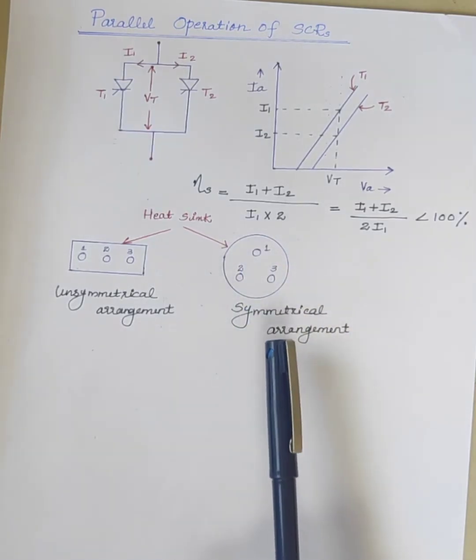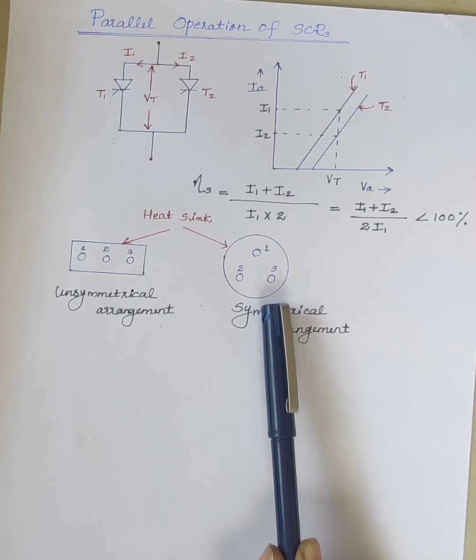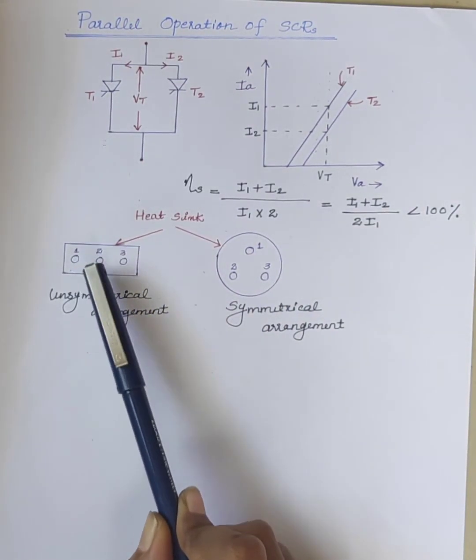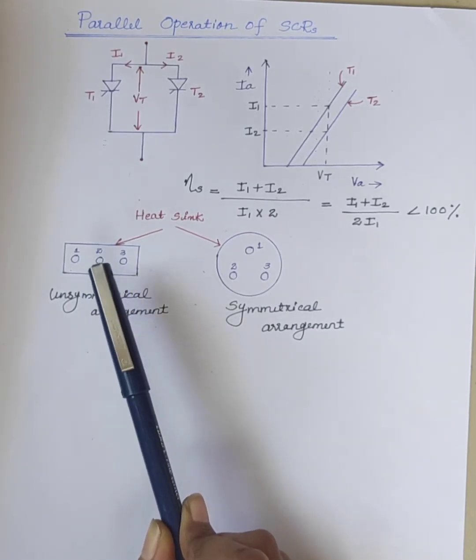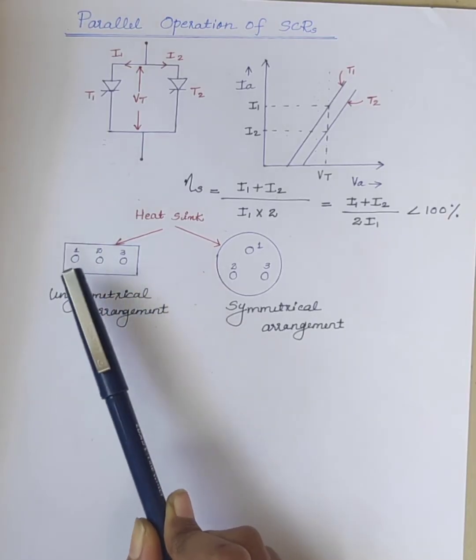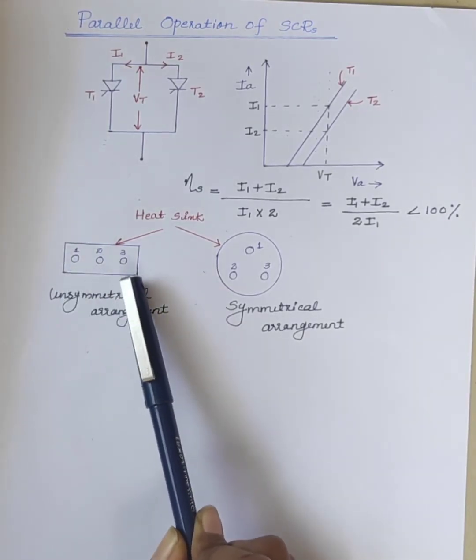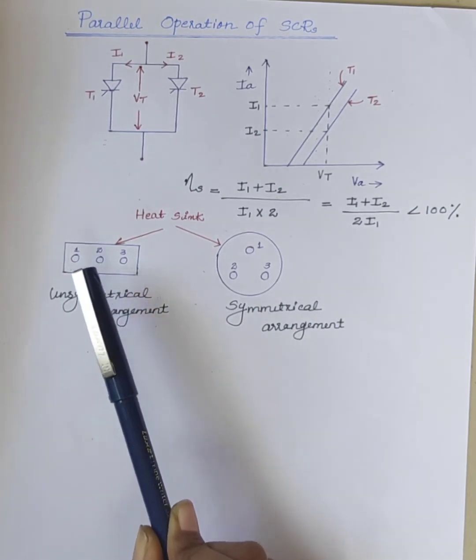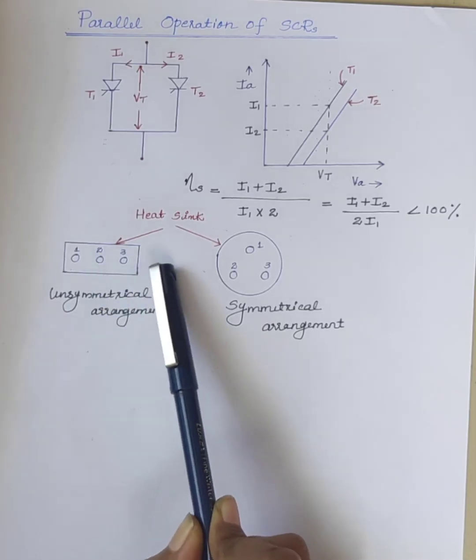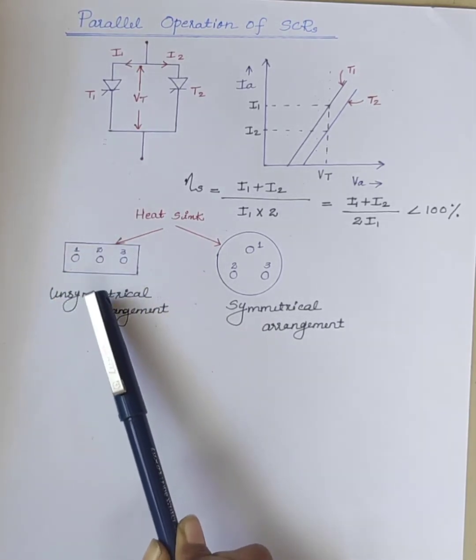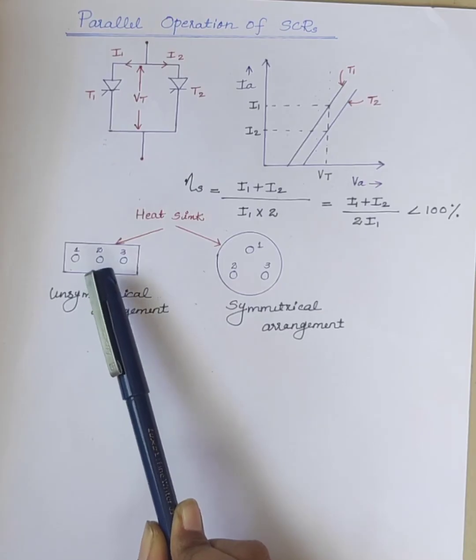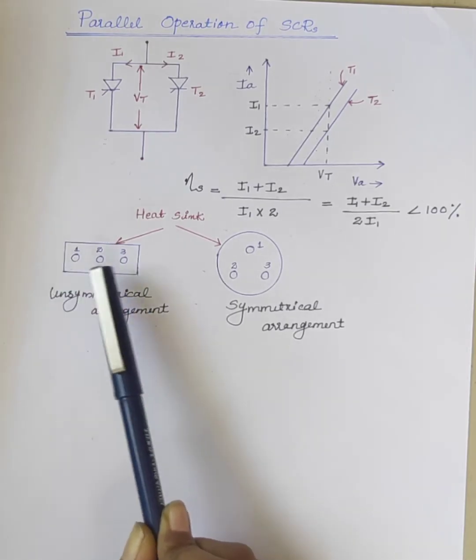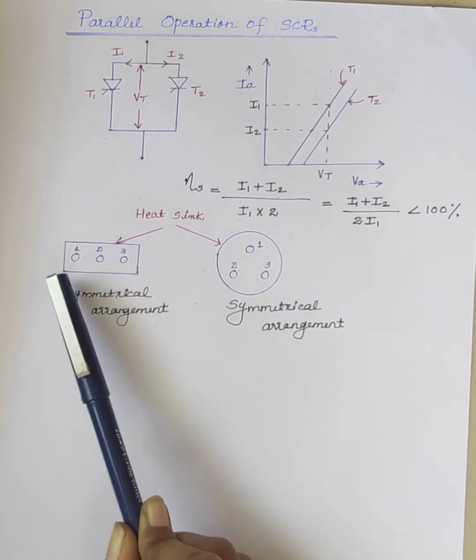These are the heat sink, and this one is the unsymmetrical arrangement of SCRs on the heat sink, and this one is the symmetrical arrangement. In unsymmetrical mounting, the middle conductor 2 will have the maximum magnetic flux linkage due to the presence of nearby conductors 1 and 3. This will cause conductor 2 to have maximum inductance among the 3 conductors. Therefore, current flowing through the middle conductor 2 will be lower as compared to the remaining conductors 1 and 3.